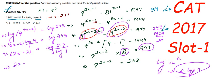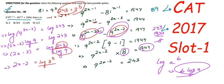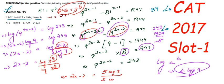Now, 243 equals 3^5 and 9 equals 3^2, so we substitute: (2x−2) equals log(3^5) divided by log(3^2). Bringing powers in front of log, this becomes 5·log 3 divided by 2·log 3. The log 3 terms cancel, leaving 2x−2 equals 5/2.